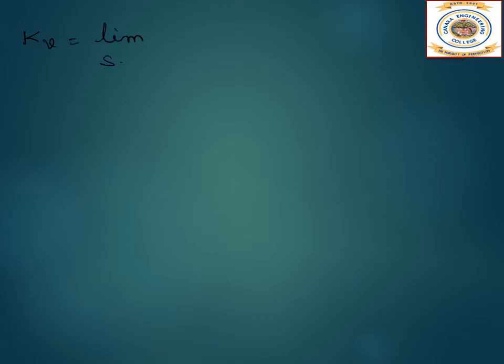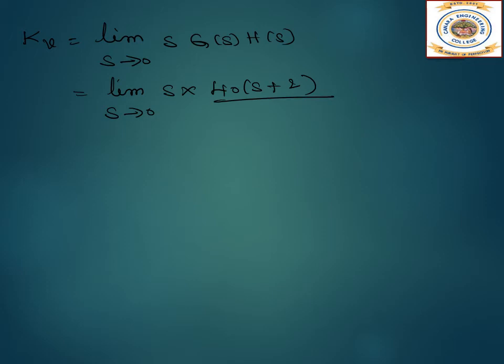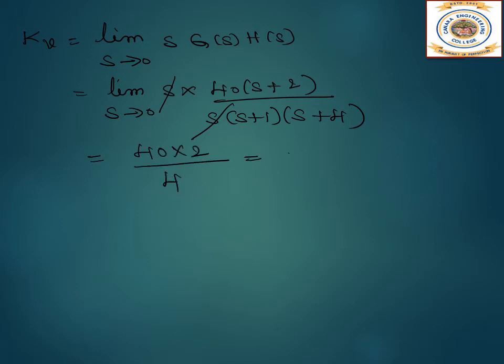For Kv: limit s→0 of s·G(s)H(s) = limit s→0 of s×40(s+2)/[s(s+1)(s+4)]. The s terms cancel, and applying limits: 40×2/(1×4) = 80/4 = 20. So Kv = 20.